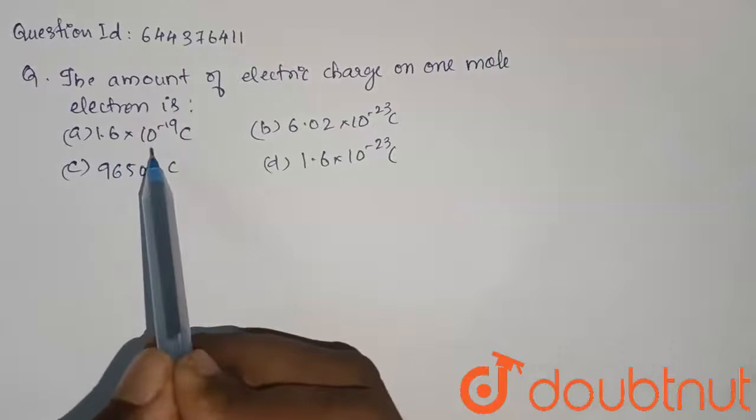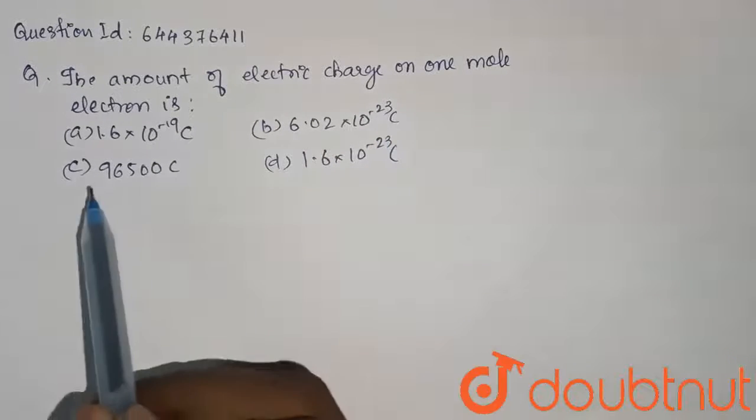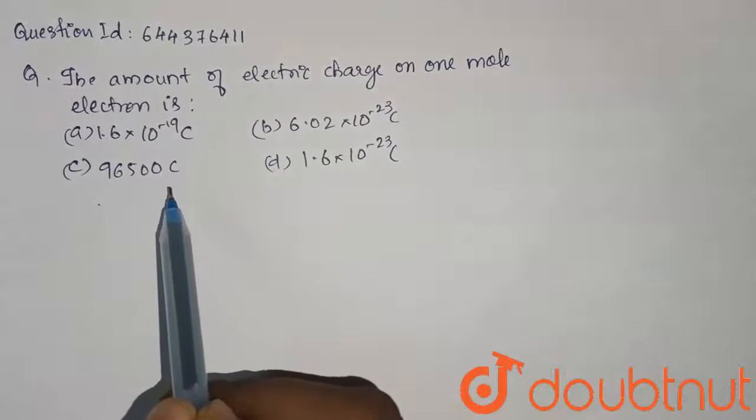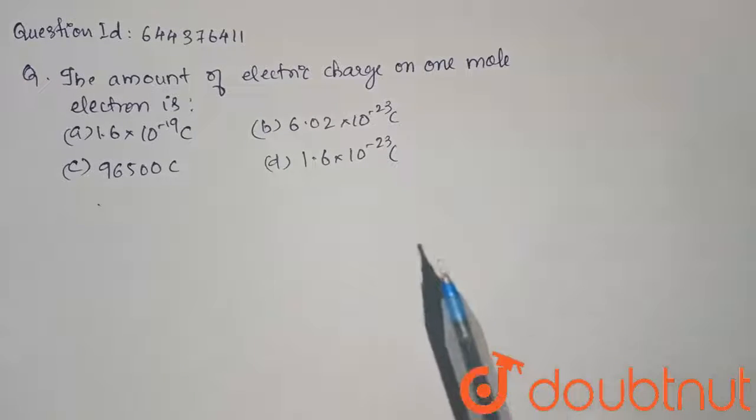Options are given: 1.6 into 10 power minus 19 coulombs, 6.02 into 10 power minus 23 coulombs, 96,500 coulombs which is 1 faraday, and 1.6 into 10 power minus 3 coulombs.